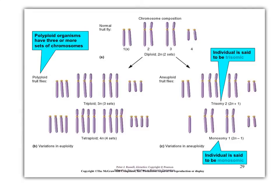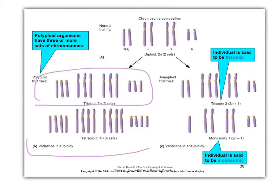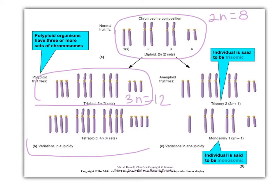This figure shows variations in euploidy. They're showing us a triploid. If this were a normal diploid, you'd count 2 sets: 2N equals 8. In the triploid, you have 3 sets — 3N equals 12. And 4N equals 16, which means N equals 4. You should be able to go back and forth between these — not just diploids, but triploids, tetraploids, octoploids, all that.